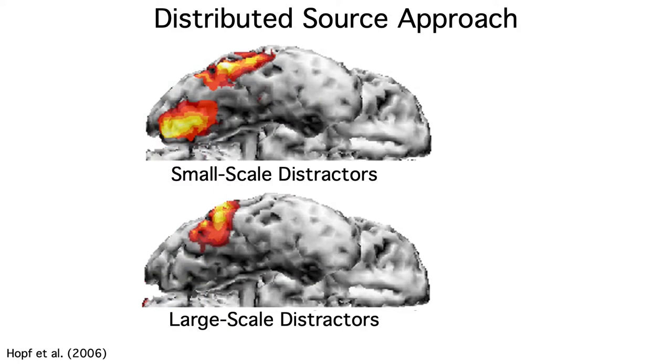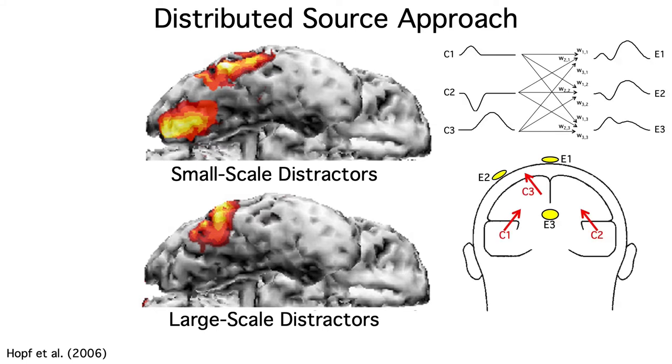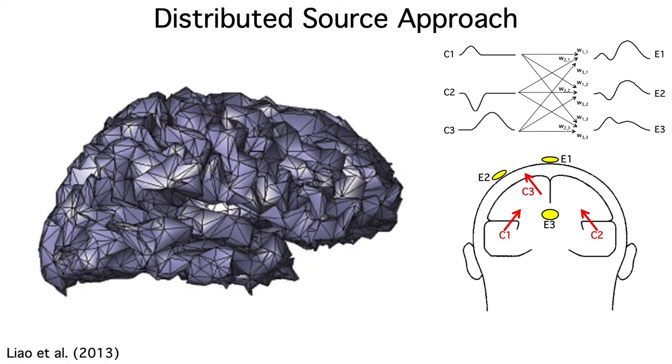The other main method is called the distributed source approach. This is a generalization of the basic model of voltage propagation that we've been talking about all along, where the voltage at a given electrode is equal to the weighted sum of all the source waveforms. But instead of a small number of dipoles, we take a structural MRI scan and tessellate the cortical surface into thousands of tiny patches. We then assume that each patch is a tiny dipole. We know the locations of the patches from the structural MRI data, and we assume that the dipole for a given patch is oriented perpendicular to the cortical surface.